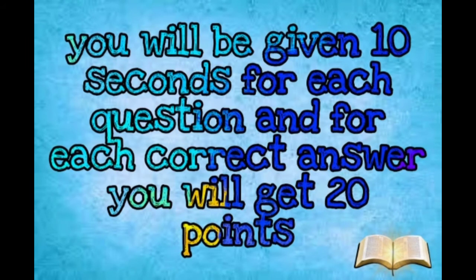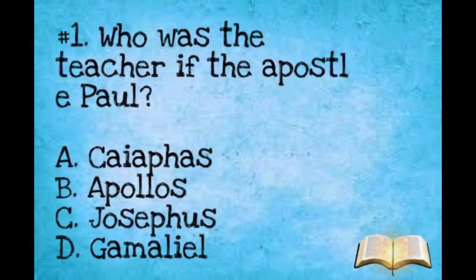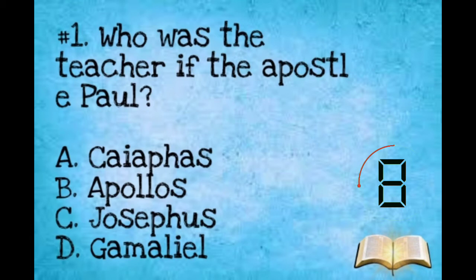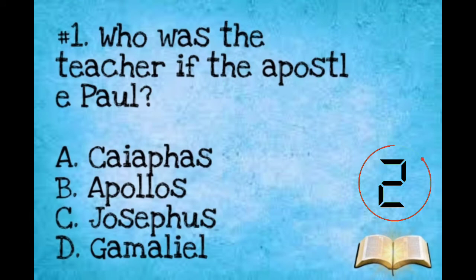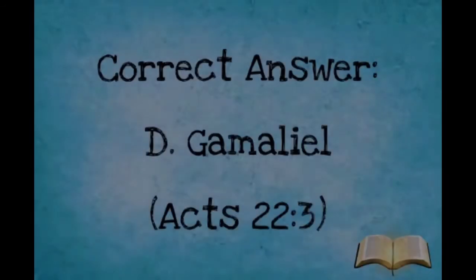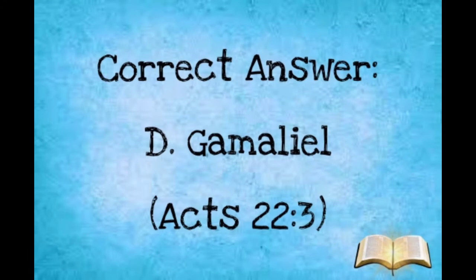You will be given 10 seconds for each question, and for each correct answer you will be given 20 points. Number one: Who was the teacher of the apostle Paul? A: Caiaphas. B: Apollos. C: Josephus. D: Gamaliel. The correct answer is letter D, Gamaliel.